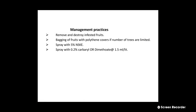The management practices or control measures for Fruit Borer: firstly remove and destroy the infested fruits. Then bagging of fruits with polythene covers if number of trees is limited. We can also spray with 5% NSKE, then spray with 0.2% carbaryl, or spray with dimethoate at the rate of 1.5 ml per liter.